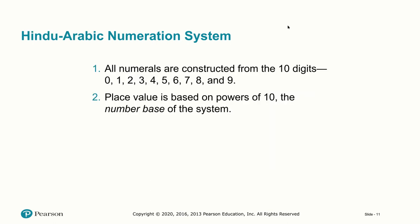For our familiar Hindu-Arabic numeration system, all numerals are constructed from 10 digits: 0 through 9. The place value is based on powers of 10, which makes it a decimal system and very easy to work with. The number base for the Hindu-Arabic system is 10.